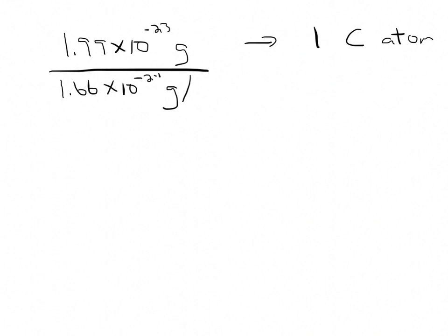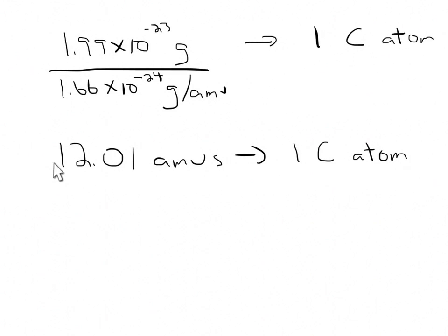So if we were to look at a carbon atom, which has a mass of 1.99 times 10 to the negative 23 grams, that's one carbon atom. And if we divide it by 1.66 times 10 to the negative 24 grams per amu, this gives us an interesting number. This gives us a number, 12.01 amu's. So that's what a carbon atom has a mass of. One carbon atom has a mass of 12.01 amu's.